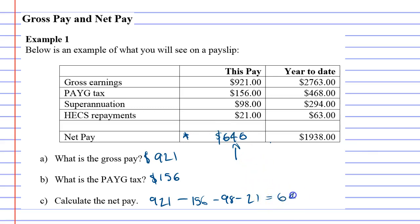So what that tells us is that even though this person has a gross pay of $921, only $646 would actually go into the bank.